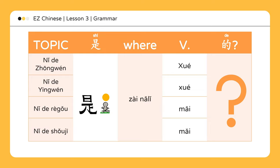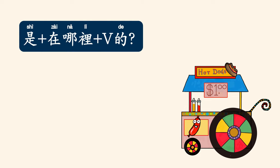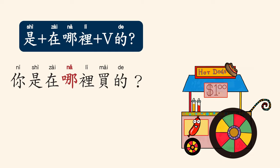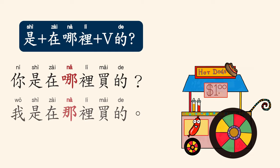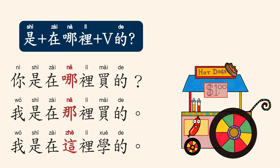在哪里? Where? 你的热狗是在哪里买的? Where did you buy your hot dog? 你的手机是在哪里买的? Where did you buy your cell phone? 哪里 means 'where,' 那里 means 'there,' and 这里 means 'here' — emphasizing location. 你是在哪里买的? Where did you buy that? 我是在那里买的。 I bought it over there. 我是在这里学的。 I learned it here.